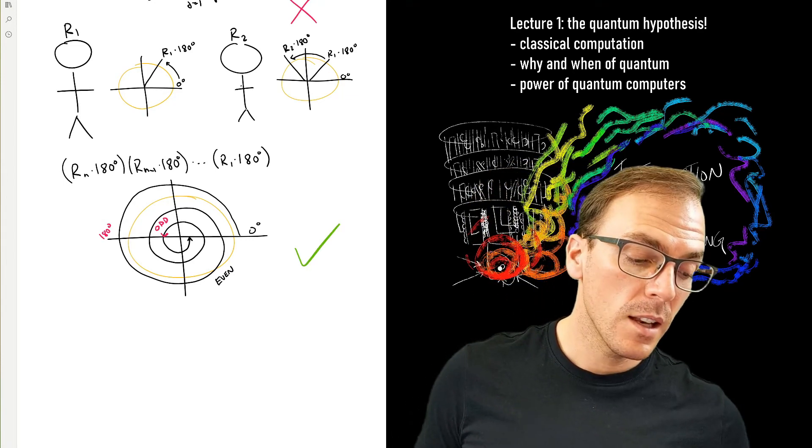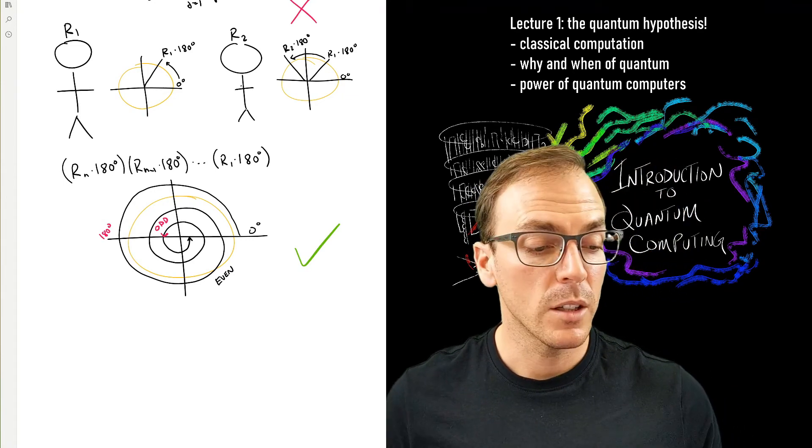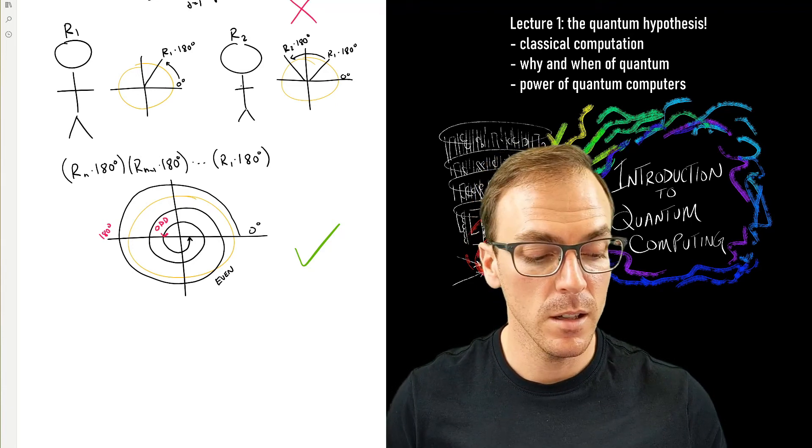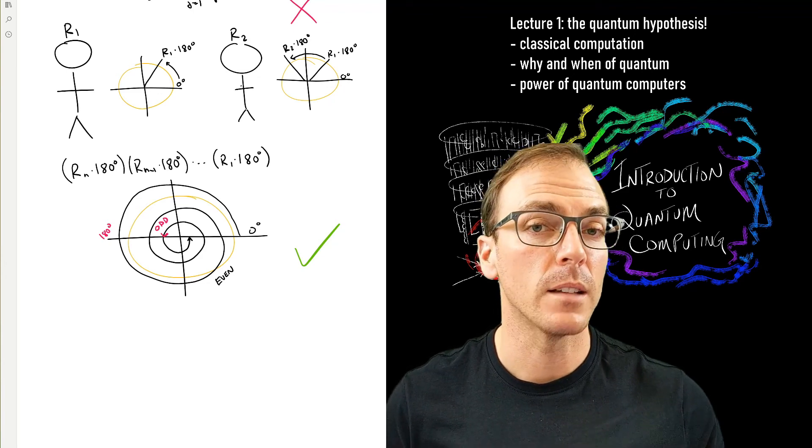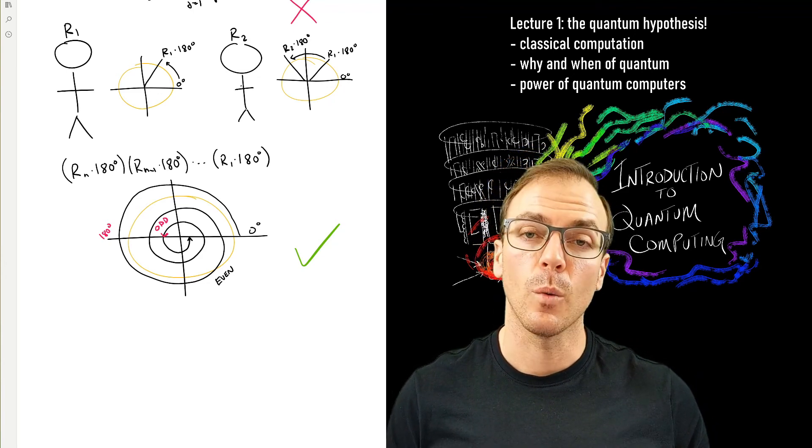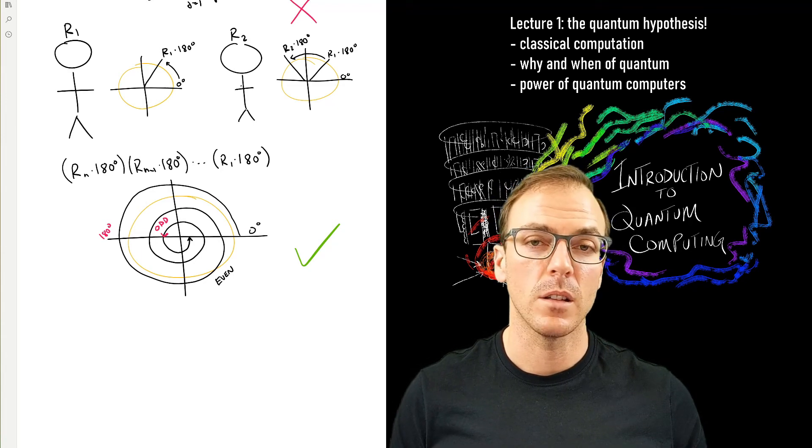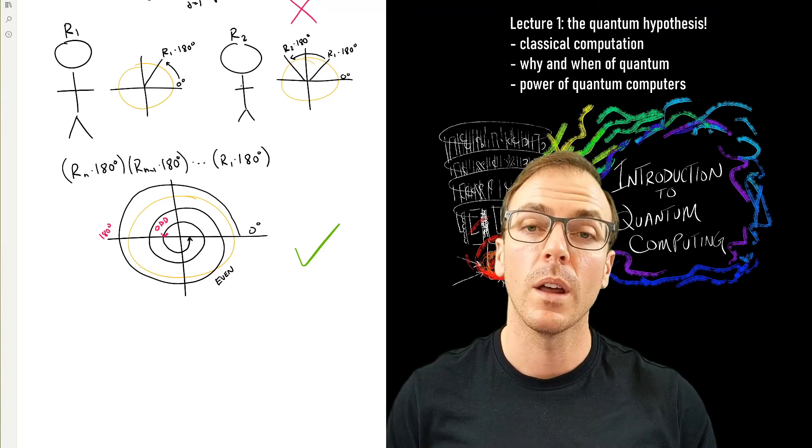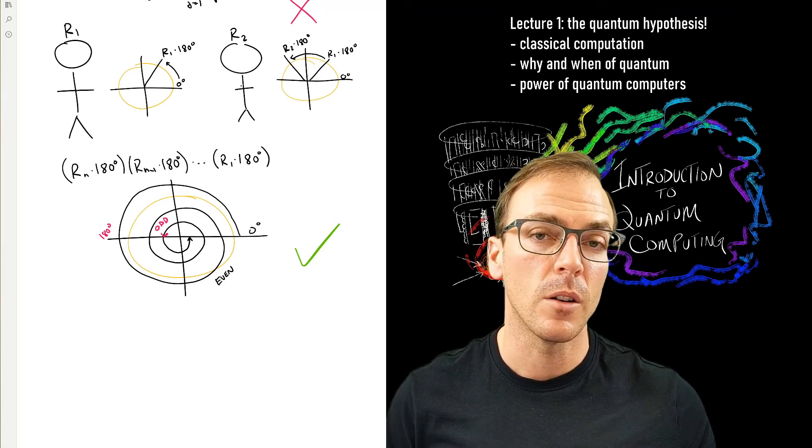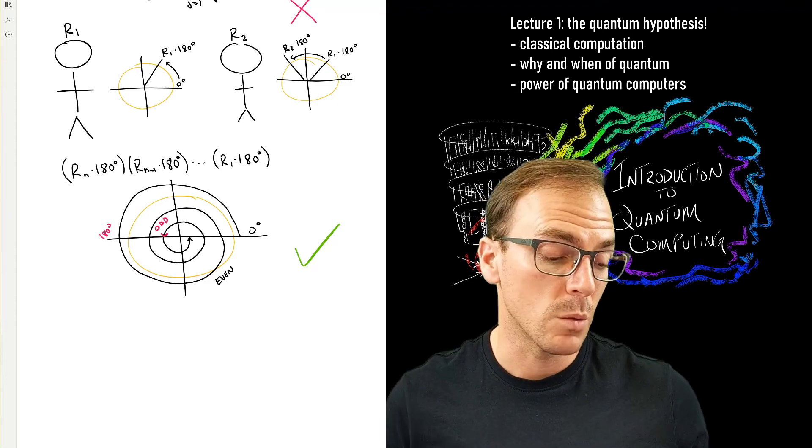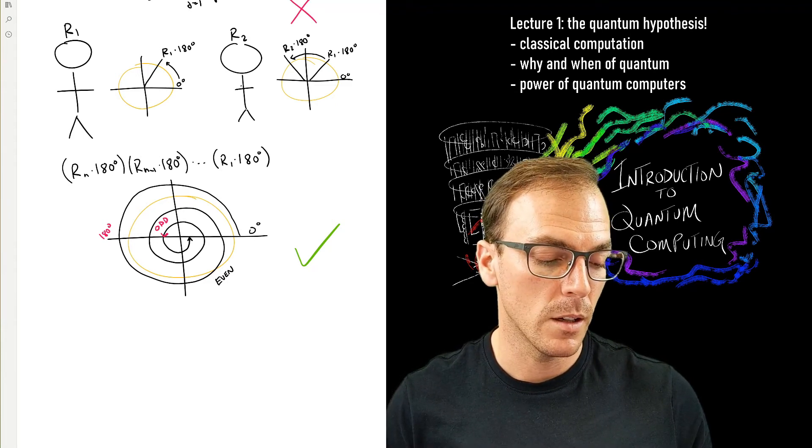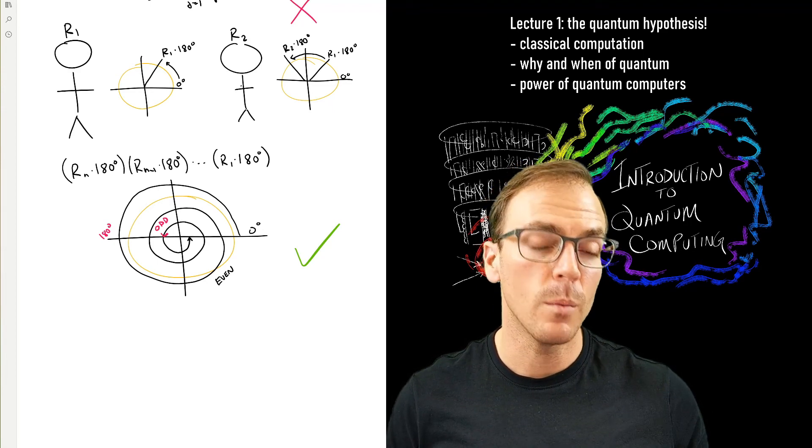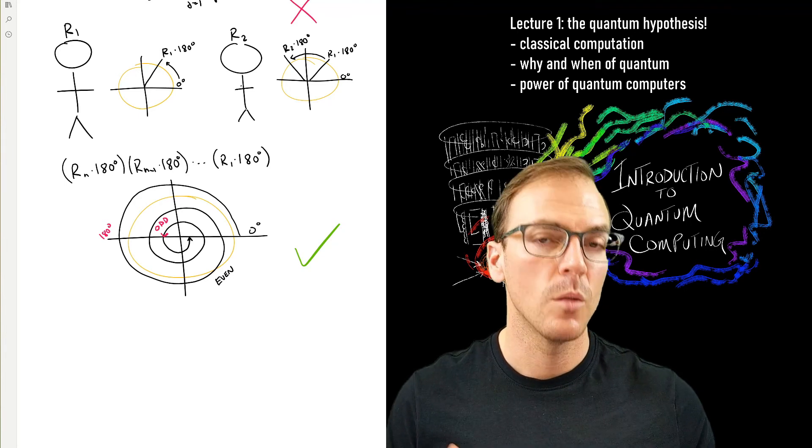So if instead of having to communicate with bits, they were given this disk, and the last player can still be required only to communicate a single bit. Because there's only two options for what's going to happen to this disk. Either it's going to be rotated not at all, or 180 degrees, depending on whether the sum of these numbers that they're given is even or odd. So they can still just record a bit. That would be a fine restriction on the players. And they could still win the game, provided that they were given this extra resource, which is the disk.